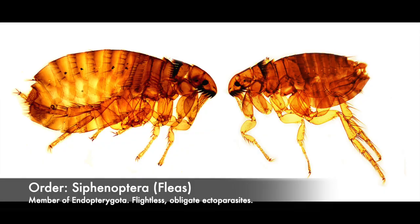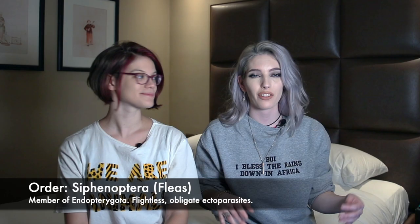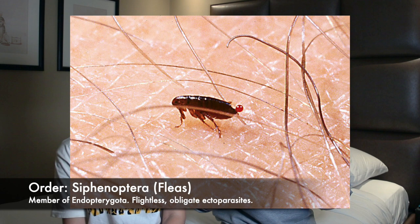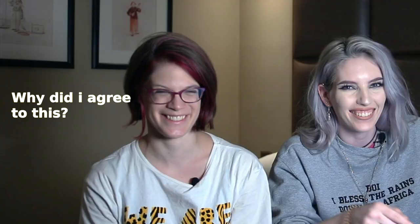One of the orders we're going to talk about is Siphonaptera — the fleas. They have 2,500 species. They're obligate ectoparasites, meaning they have to live on top of a body to survive, drinking your blood — because they suck. They have a lifespan of roughly 100 days and are ridiculously fast breeders, laying about 50 eggs a day and up to 2,000 within their life cycle.